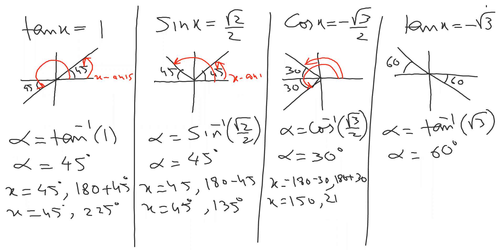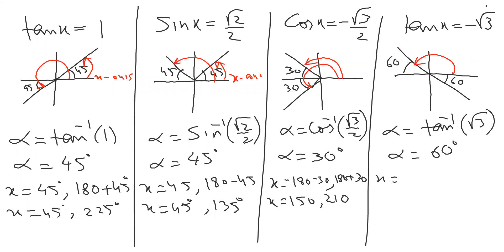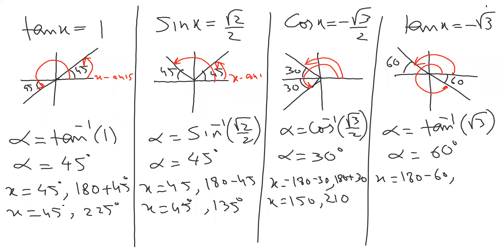Last question — same story. First answer: 180 minus 60. Next: start from here and reach this one. Full circle is 360, but this part I don't want, so 360 minus 60. Answers are 120 and 300.